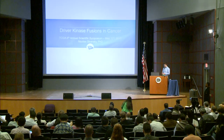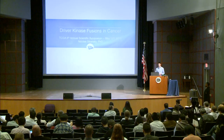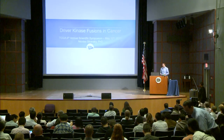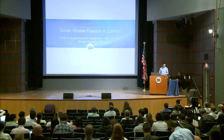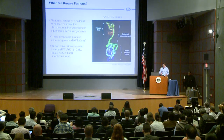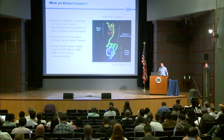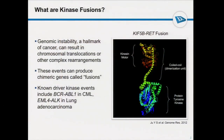The goal is to find new drivers in cancer, and in particular kinase drivers, because we're mostly interested in kinases. As we've discussed several times already in this meeting, kinase fusions or fusions in general are a result of genomic instability in cancer. We know of many examples of strong drivers, such as BCR-ABL or EML4-ALK, that are frequent in CML and lung adenocarcinoma respectively, and these are very strong drivers because the clinical trials and approved therapies associated with these alterations are very successful.